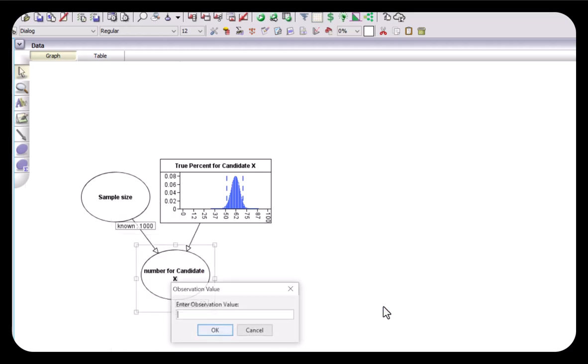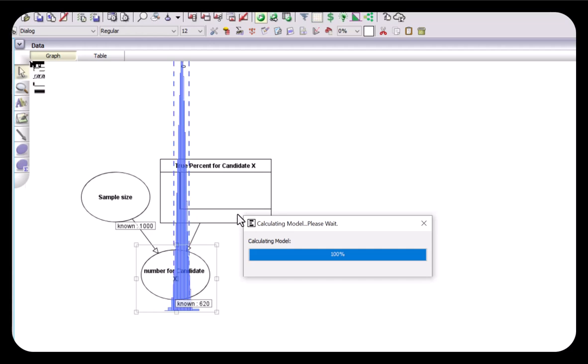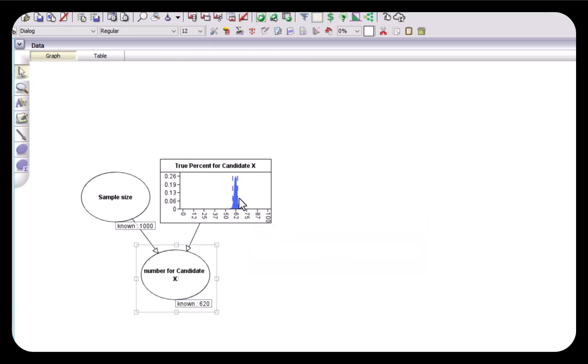Whereas if for example the sample size was 1000 and the number for candidate X in that sample was 620, when we run the model we see a narrower distribution where it now is very close to 62 percent and the 95 percent confidence interval lies between about 59 and 65.